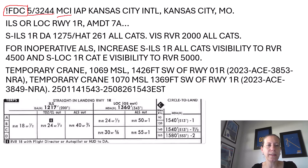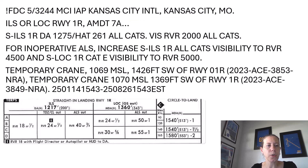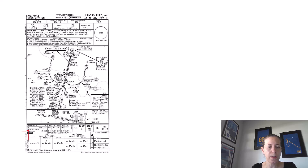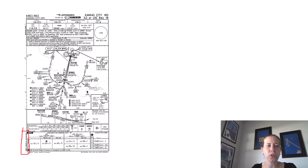This NOTAM is for Kansas City, related to an instrument approach into Kansas City International, Kansas City, Missouri. It's for the ILS or Localizer Runway 1 Right Amendment 7A. When you look at the side of a Jeppesen chart, in the corner you will see the current amendment status of that approach chart, so you would have to check to see if this one applied to the version you're looking at.